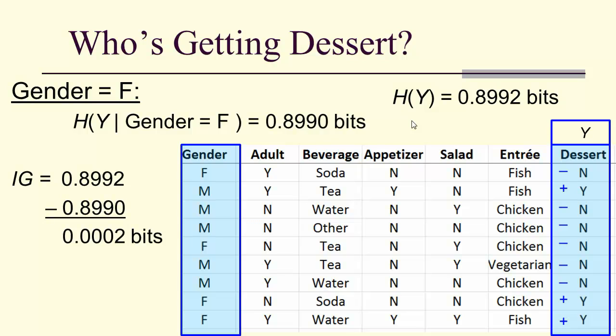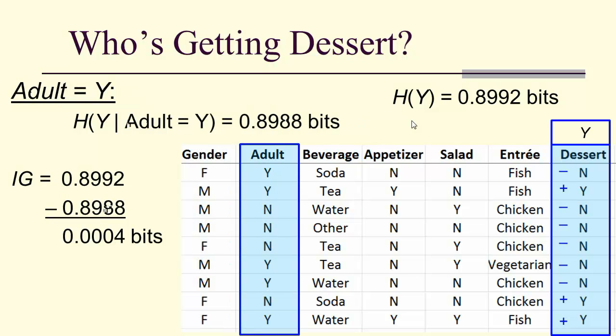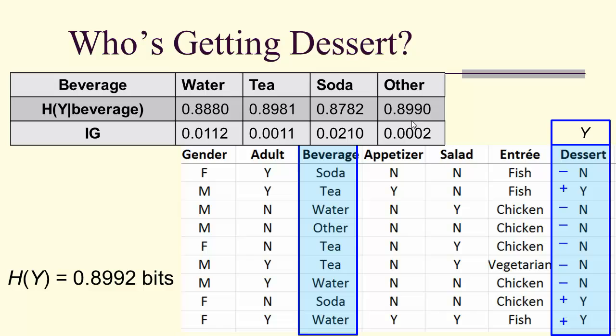Let's look at the different categories. Starting with gender: where gender equals female, the entropy of y given that condition is 0.8990, giving an information gain of 0.0002 bits. For adult equals yes, the specific entropy is 0.8988, giving an information gain of 0.0004 bits. For beverage, there are four possibilities: water, tea, soda, or other.